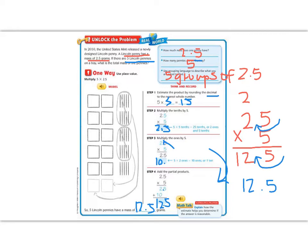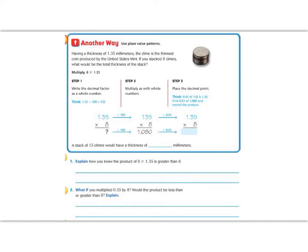Let's look at another option in the another way on the next page. Another way to multiply a decimal is to use place value patterns.